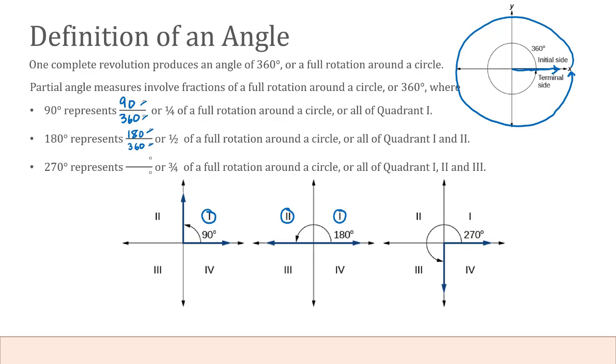270 degrees represents 270 out of 360 degrees, which is three fourths of a full rotation when we reduce, and takes us through not only quadrant one, but also quadrant two and quadrant three.